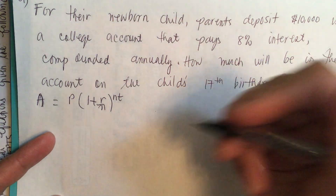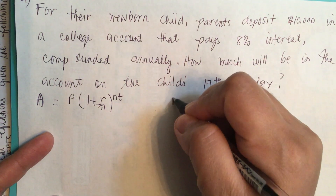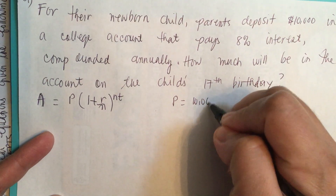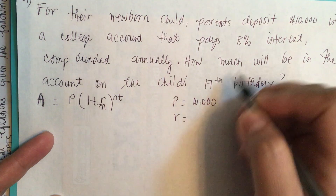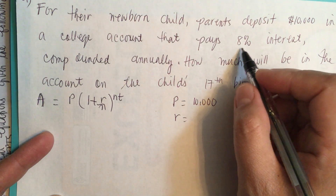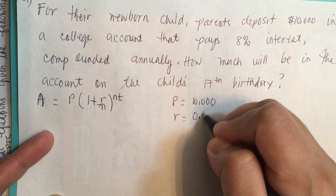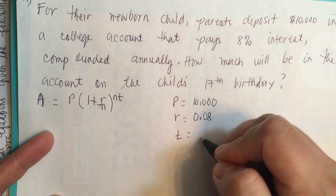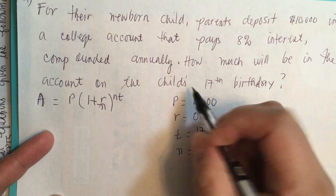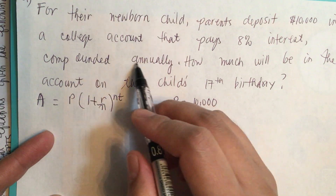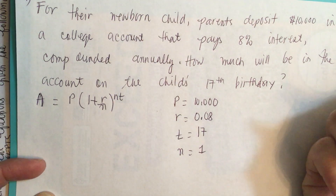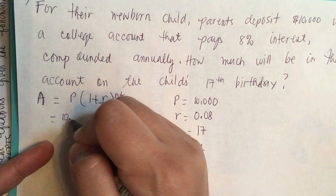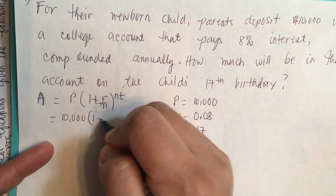Let's make our parameter list: P is equal to ten thousand. R is equal to the interest rate per year, which is eight percent, or in decimal it's 0.08. T is equal to 17, and N is equal to the number of compoundings, which is annually, so it is one. We plug in our numbers into the equation: ten thousand times one plus...